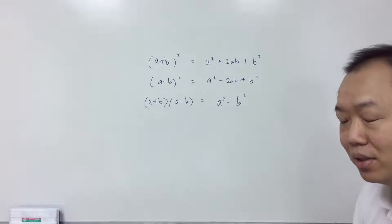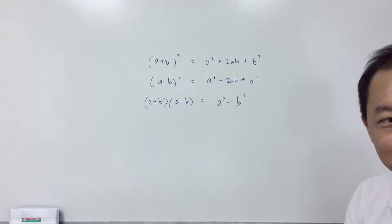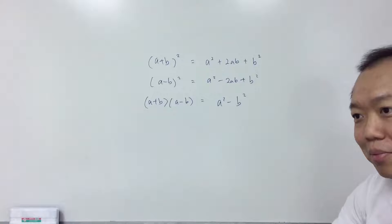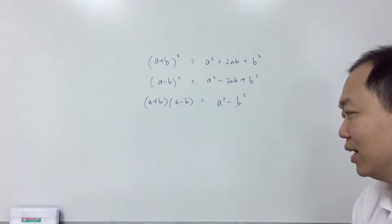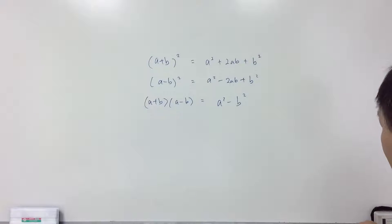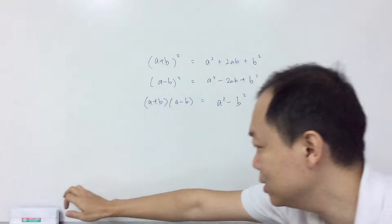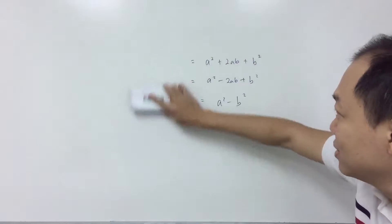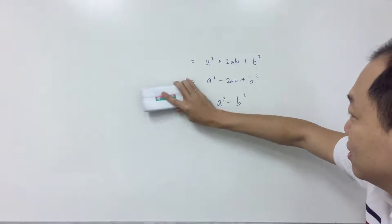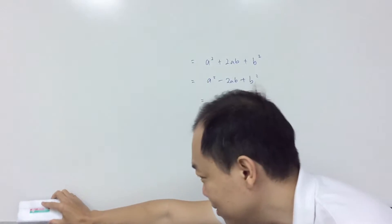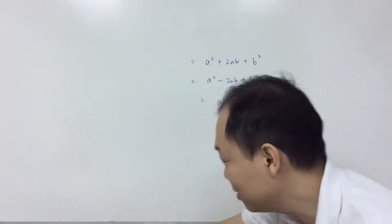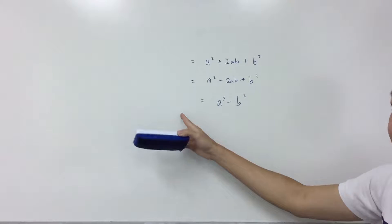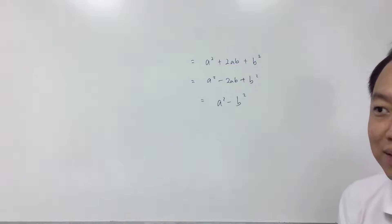This is the easy part because in the questions they don't give you A and B. They give you all sorts of stuff. So what we're going to do is test everybody the reverse first. Okay, start from Yukin.